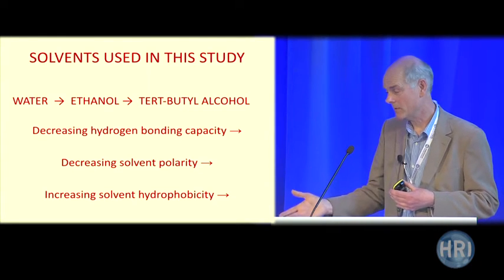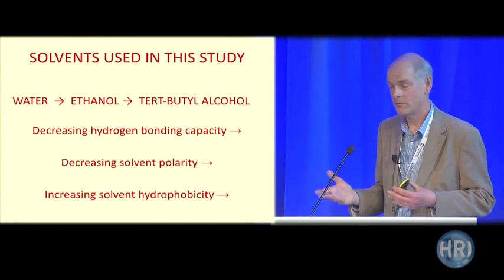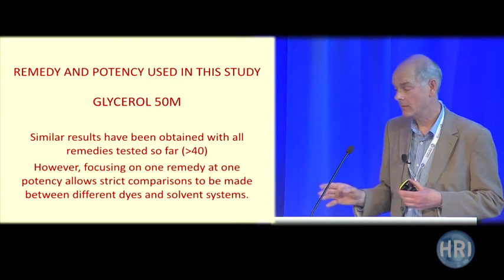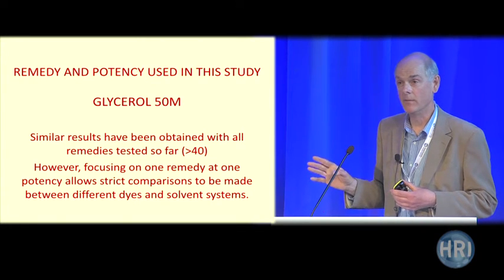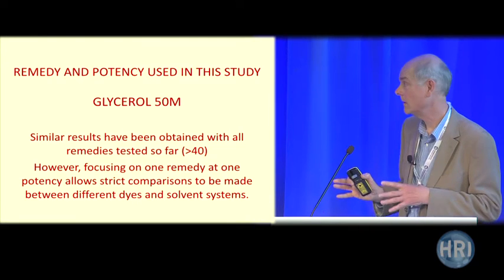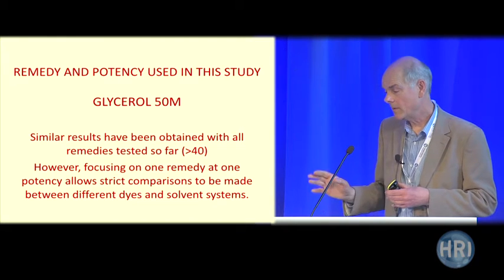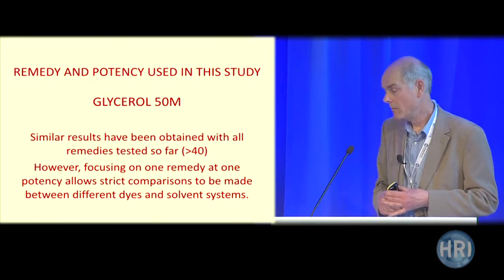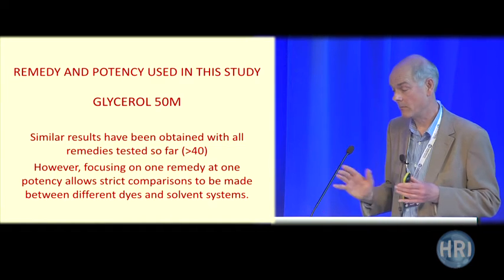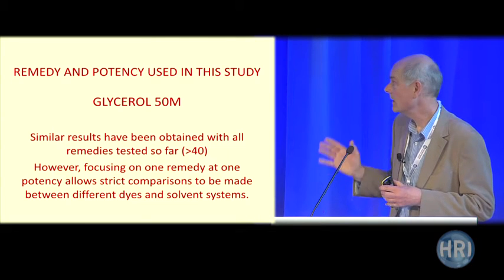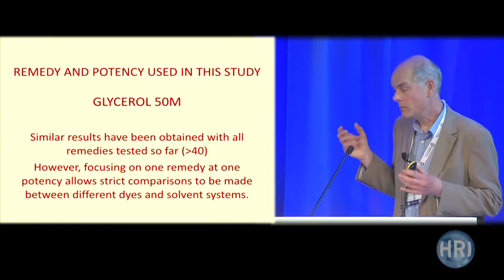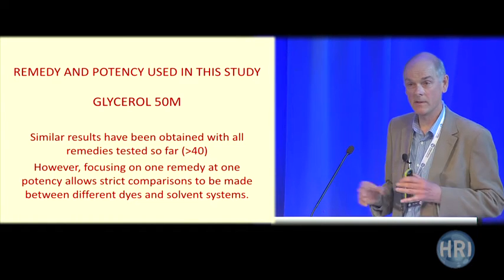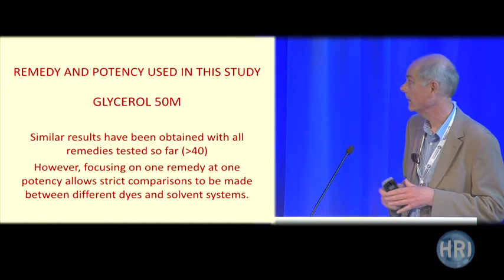Throughout this study, only one remedy has been used — glycerol 50M. Similar results have been obtained with all the remedies tested so far, over 40 in different potencies. But focusing on one remedy at one potency allows strict comparisons to be made between different dyes and different solvent systems. This is something special about a chemical approach: you can hold everything down so there's one variable at a time, unlike living systems where so many variables may be changing simultaneously.